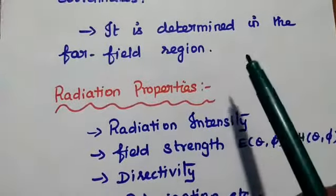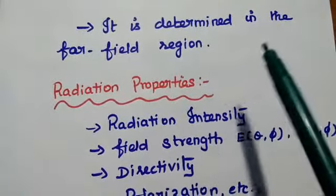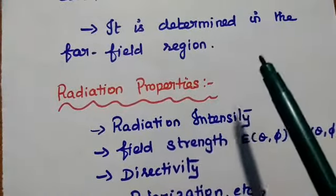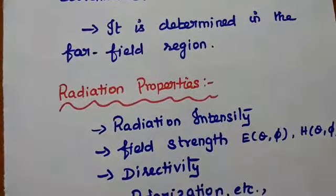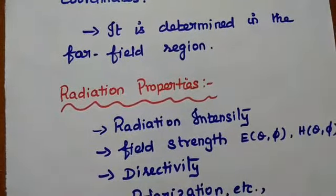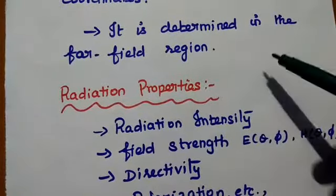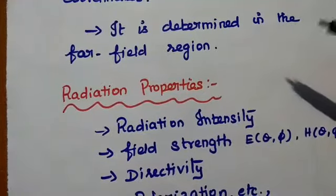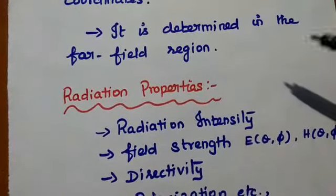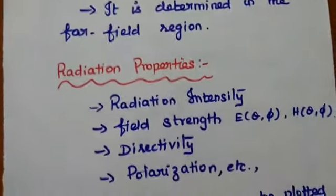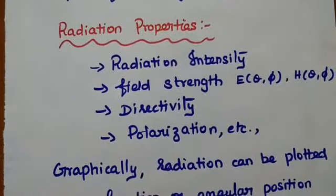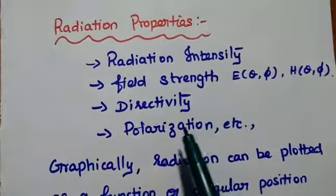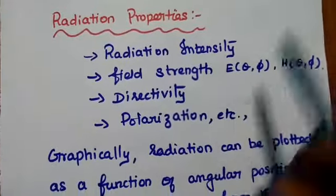Radiation pattern can be determined in the far field region only, because as we have already discussed in field regions, the radiation is maximum in the far field region, not in the near field regions. So we measure the values of electric field and magnetic field strength in EM waves in the far field region. These radiation properties include radiation intensity, field strength — that is electric field and magnetic field — directivity, polarization, etc.